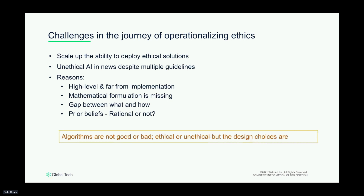How can we embed those principles into implementation when developing ML solutions? For example, in a mathematical function that takes inputs a and b and sums them up, the output is always a+b. But in ethics it doesn't always work that way — it might fulfill one context very well but not another entirely. It's largely context-driven and has some subjectivity, which makes it difficult to measure. There are also prior beliefs and rationales that are not well defined, leading to difficulty in adopting ethics in AI solutions. Importantly, algorithms are not good or bad in themselves — the design choices we make while developing a solution are what can be considered ethical or unethical.